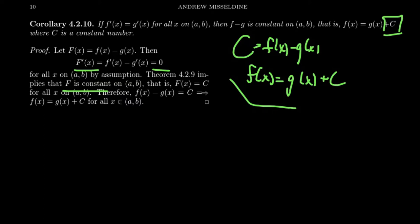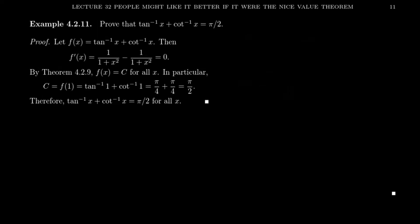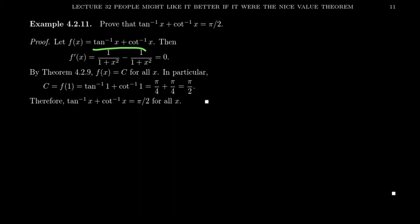Let me show one example before we close lecture 32. Let's prove that the sum of the two functions arc tangent of x plus arc cotangent of x always equals pi halves. The sum of these two inverse trig functions is always pi halves, no matter what. The way we're going to prove this is to show that the derivative of arc tangent plus arc cotangent is zero. Take the function f(x) to be that sum and take its derivative. The derivative of arc tangent is 1 over (1 plus x squared), and the derivative of arc cotangent is negative 1 over (1 plus x squared). When you add those two derivatives together, you get zero. Because the function's derivative is zero, this means that the function f is a constant — arc tangent plus arc cotangent is a constant.